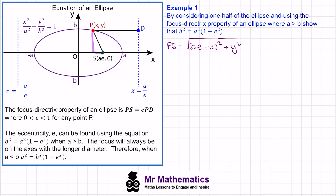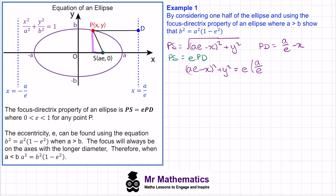PD will be the distance from the origin to the directrix minus the x value, so PD equals a over e minus x. We know that PS equals e multiplied by PD. Squaring both sides to cancel the square root, we get (ae minus x) squared plus y squared equals e times (a over e minus x), all squared.